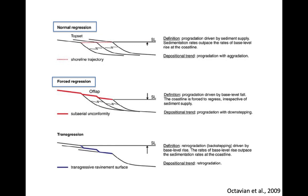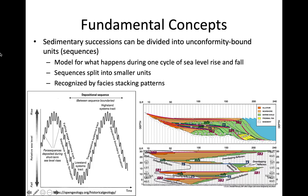This is the opposite of a forced regression, where ocean level is actually falling — typically seen with massive glaciation. In a forced regression, the coastline is forced to regress no matter how much sediment is going in. With regression we typically have increased amounts of erosion. Sea level is falling faster than sediment is supplied. Transgression, again, is sea level rise.